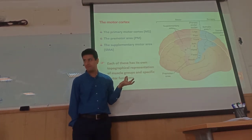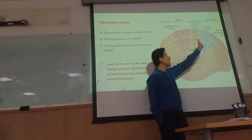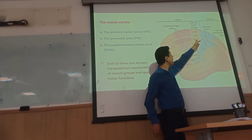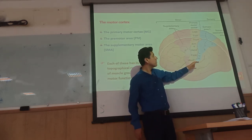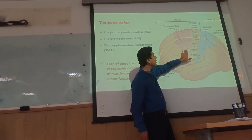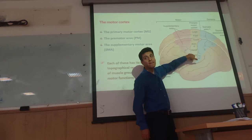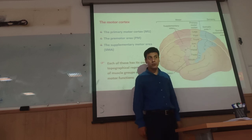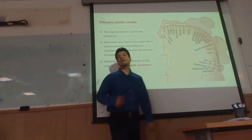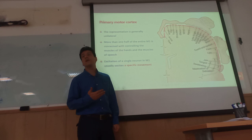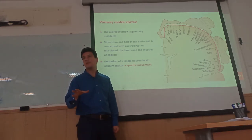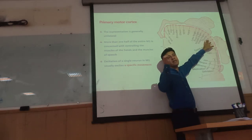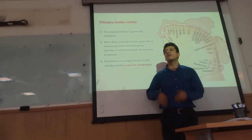Similar to somatosensory area 1, in the primary motor cortex the legs are represented in the medial side between the hemispheres and the face is represented laterally. We have the same somatotopic map in the pre-motor and supplementary motor areas, but these maps are not as precise as that of the primary motor cortex. Most of the cortical area for movement is dedicated to the face and hand.